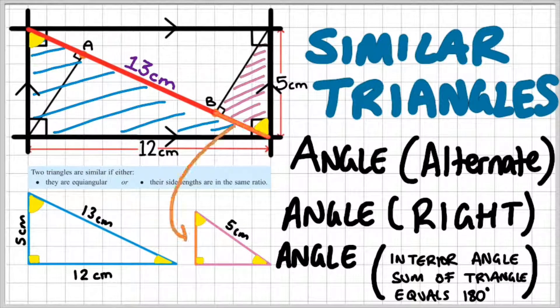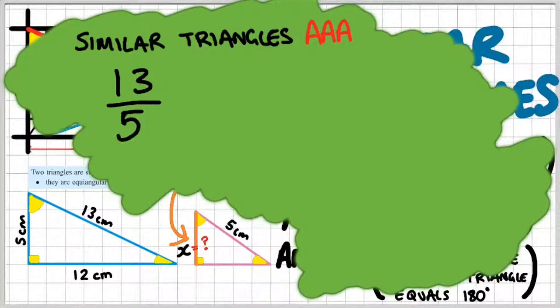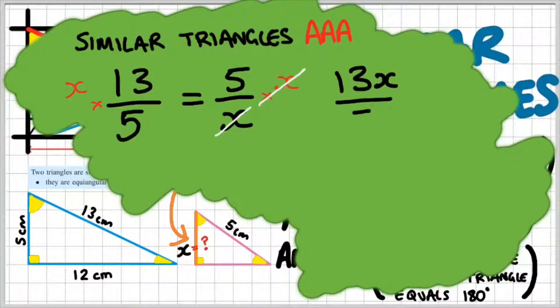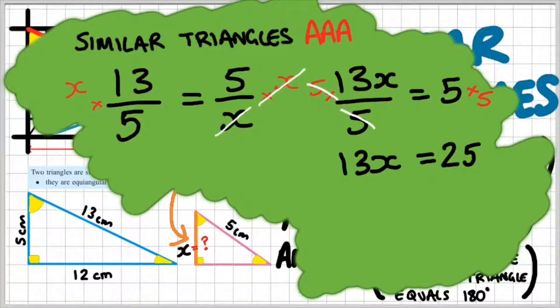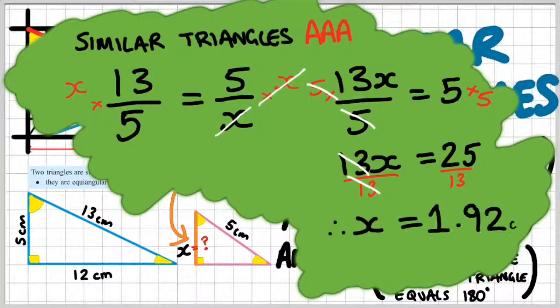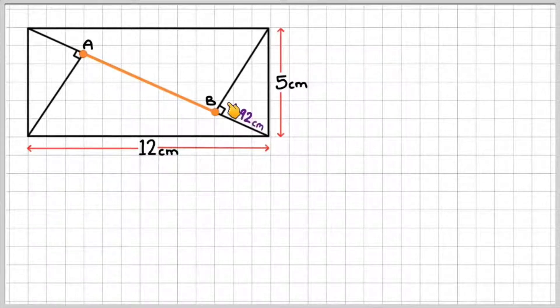Using similar triangles, we can find the missing side length, which we label x, by setting up side ratios. We know that 13 over 5 — this is my 13 and this is my 5 — should equal 5 over x, since we're using corresponding sides of similar triangles. Multiplying both sides by x cancels the x on the right, giving 13x divided by 5 equals 5. Multiplying both sides by 5 gives 13x equals 25. Dividing both sides by 13 gives x equals 1.92 centimeters. So the length from B to the vertex is 1.92 centimeters, or 25 over 13.